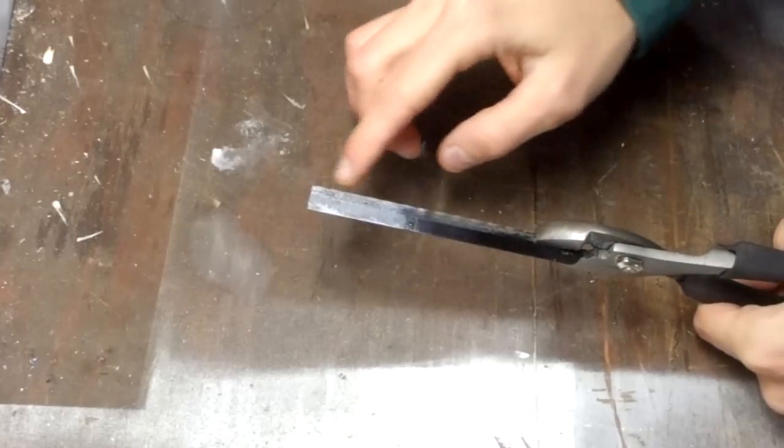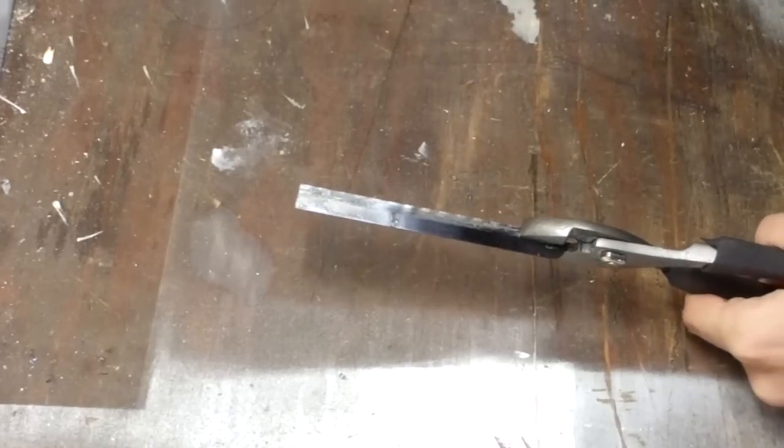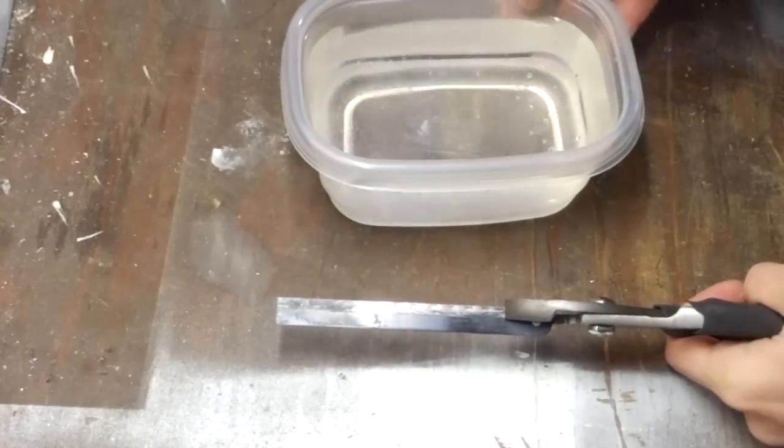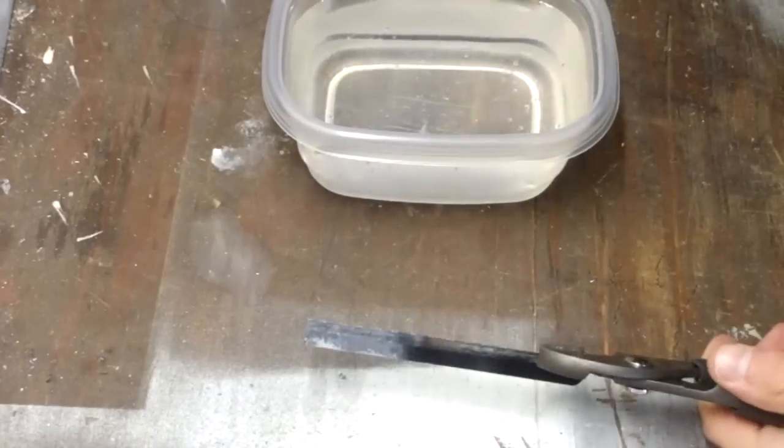Now we're going to grind away all the teeth. Get your bucket of water ready so you can quench the blade. We need to make sure that when we're grinding it, it doesn't get too hot. This can affect the hardness of the blade.